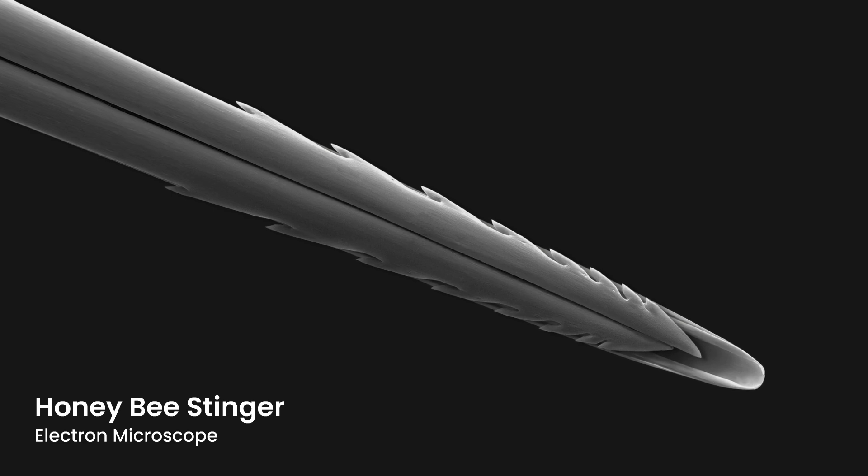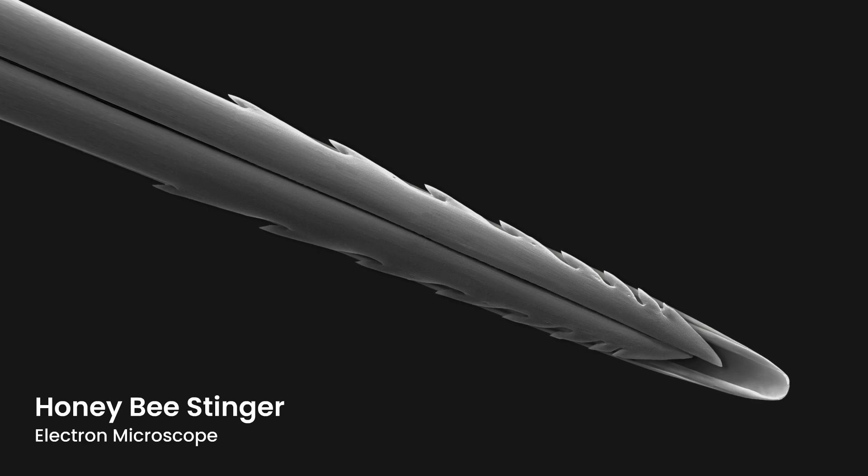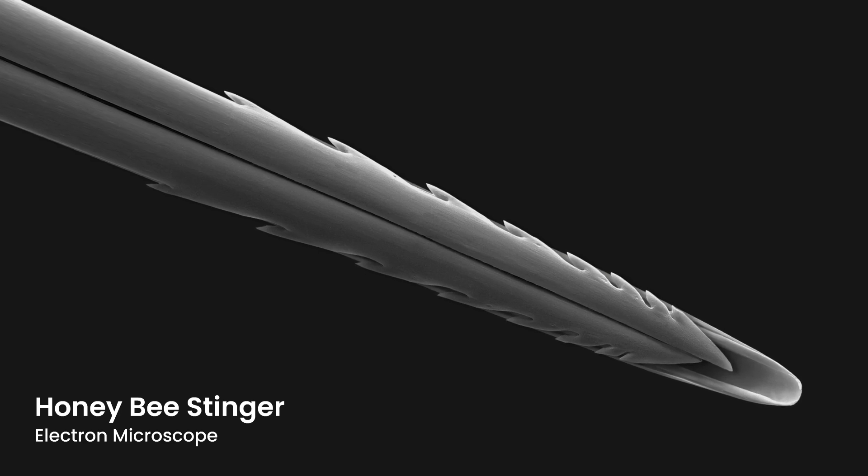This is what the end of a honeybee stinger looks like under an electron microscope. Notice those wicked, backward-facing barbs.